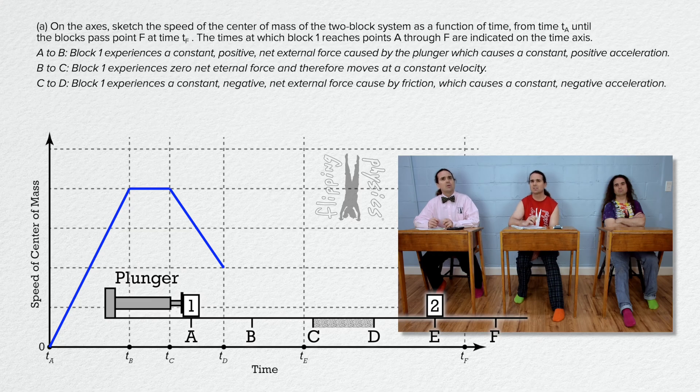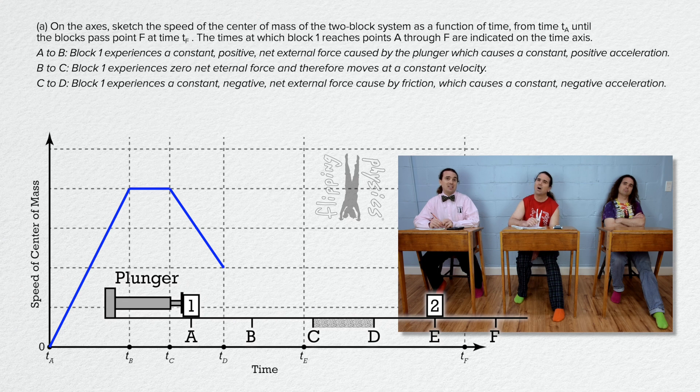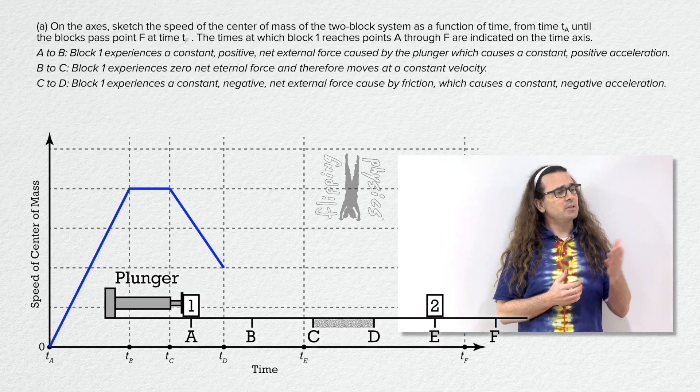How do we know the line does not go all the way down to the time axis at time D? Oh, we know the block is still moving to the right after point D, so the speed of block 1 at time D cannot be zero. Right, Mr. P? That is correct, Billy. Please keep going.